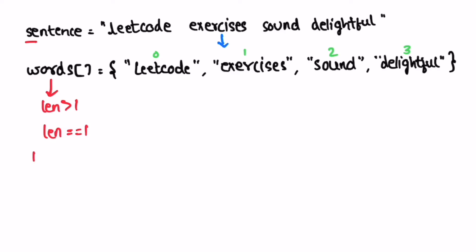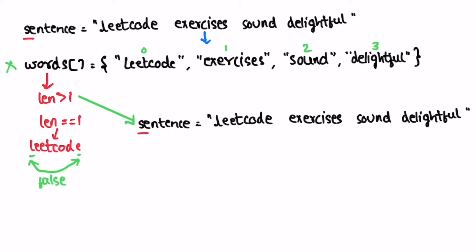For example, if there was only one word, then we access the first character and the last character in that word and check if they are the same. If they're not the same, we return false. If the length is greater than one, we process the input string directly without needing the words array. While iterating, we compare the last letter of the current word with the first letter of the next word. If they are the same, we proceed to the next word and repeat the check — this completes the first check.